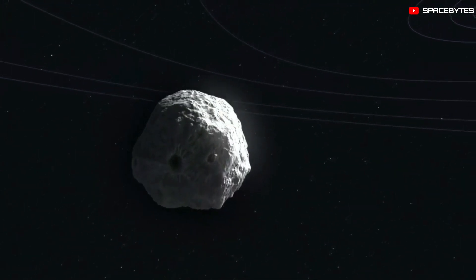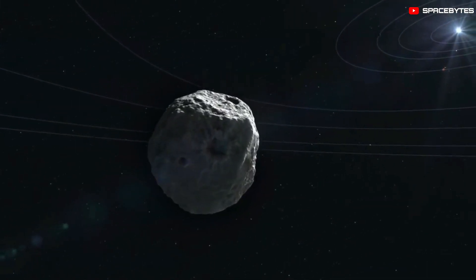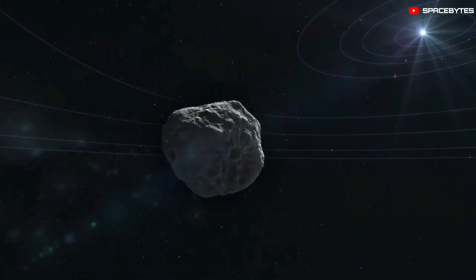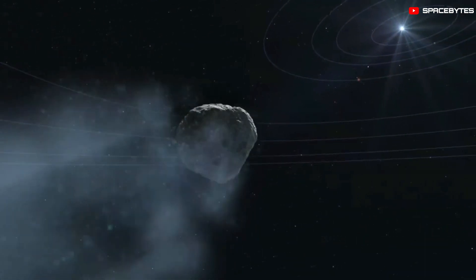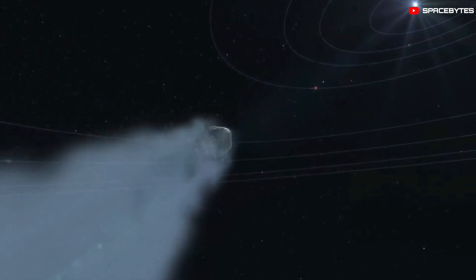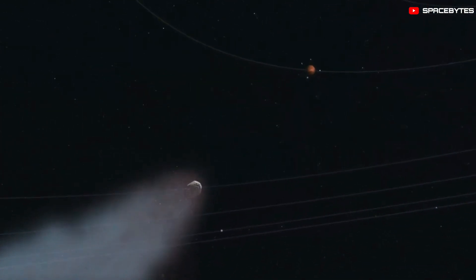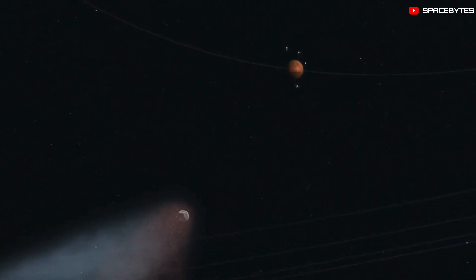At the time of its discovery in 2017, comet C-2017 K2 was thought to be the farthest known active comet. Now, C-2014 UN-271 is the longest period comet that is currently known.